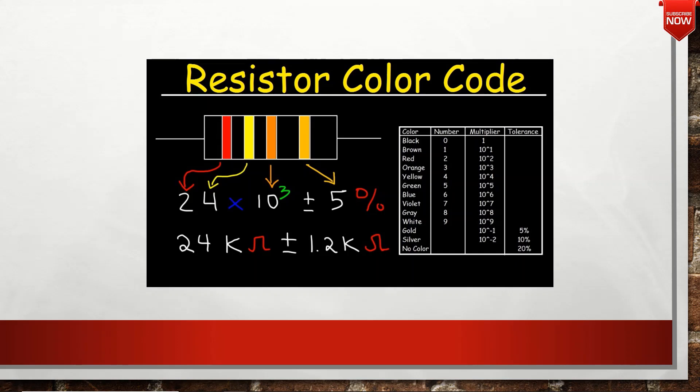The color code table is as follows: Black = 0, Brown = 1, Red = 2, Orange = 3, Yellow = 4, Green = 5, Blue = 6, Violet = 7, Gray = 8, White = 9.